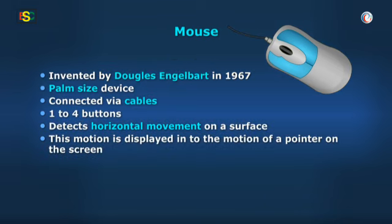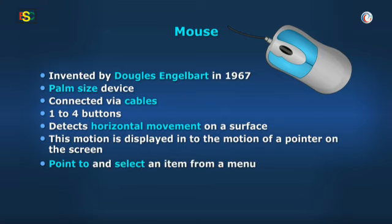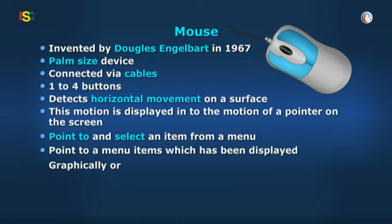By this device, we can point to and select an item from a menu available on different programs and softwares. It may be considered as the most important input device of the computer, which helps in taking the computer to the masses. Before the invention of the mouse, every command had to be typed, for which a lot of training was required. With the mouse, any user can point to menu items which have been displayed graphically or in small images and select it.